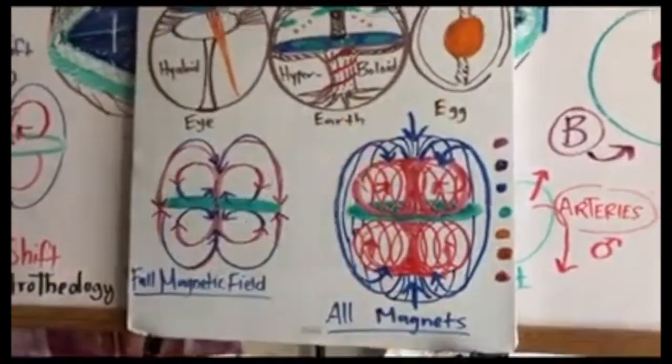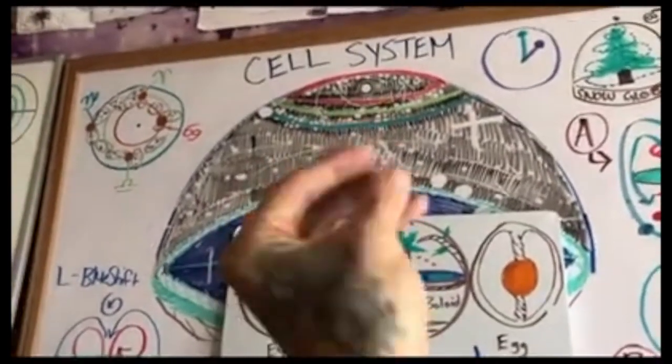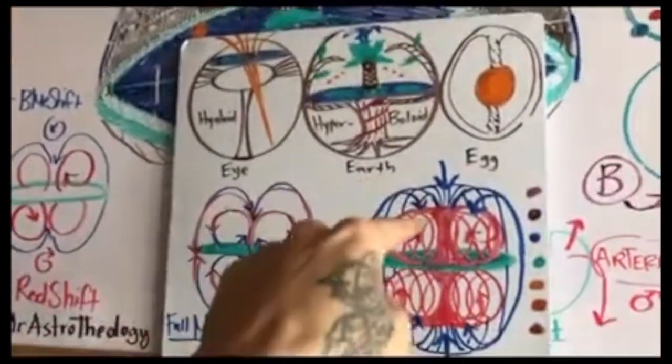So the energy from the earth shoots up and there's a big aura, the aurora borealis of the earth. Just like your body has an aura, high pressure, the earth has an aurora. It's no different.